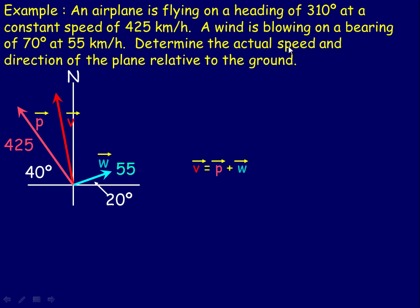We're asked to determine the actual speed and direction of the plane relative to the ground. We're going to find the components of each of these two vectors — that will give us the component of our resultant velocity vector, which is the sum of these two vectors. The wind is blowing on a bearing of 70 degrees at 55 kilometers per hour, so this is 70 degrees, making 20 degrees with the positive x-axis. For the plane vector, if this is 40 degrees, then the angle with the positive x-axis is 140 degrees, because 40 and 140 add to 180 to form a straight line.